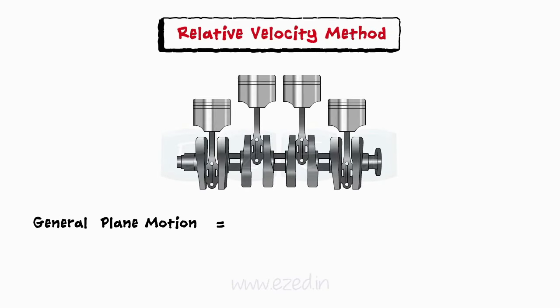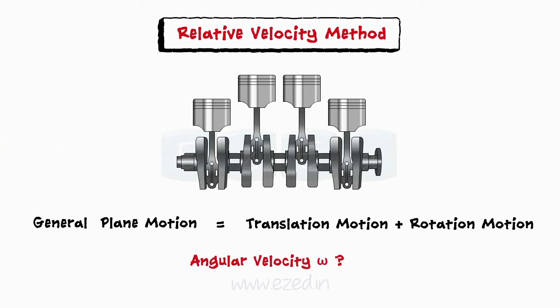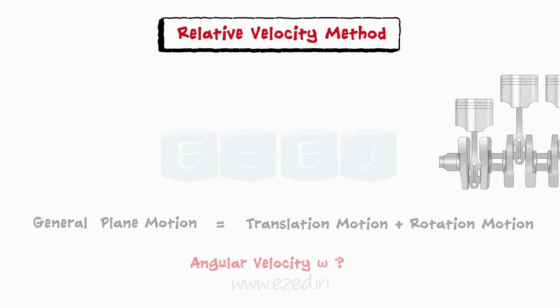General plane motion is a sum of translation and rotation motion. To find the angular velocity of a body performing general plane motion, we use the relative velocity method, which is one of the methods for analyzing general plane motion.